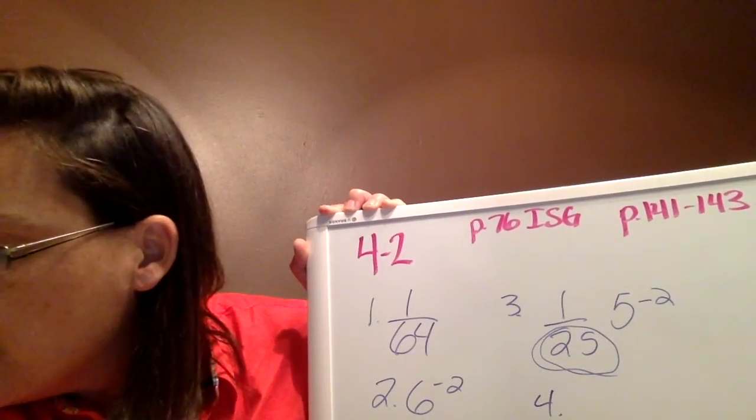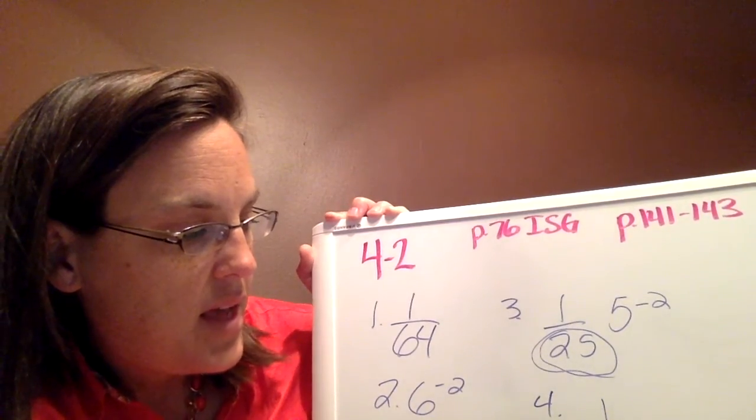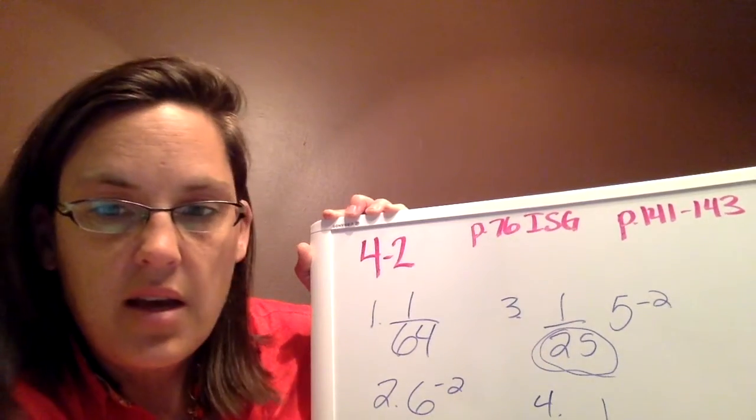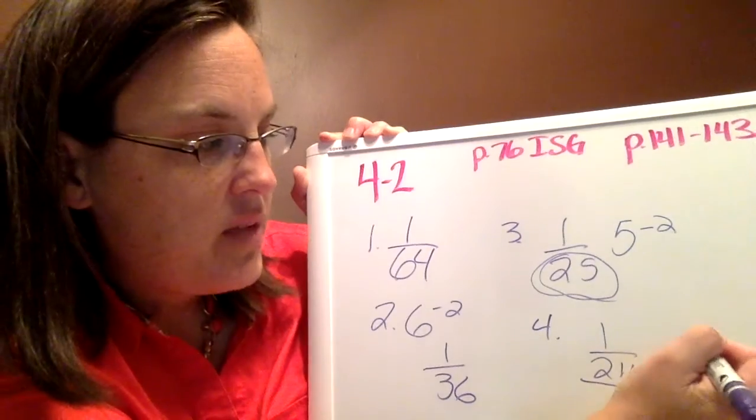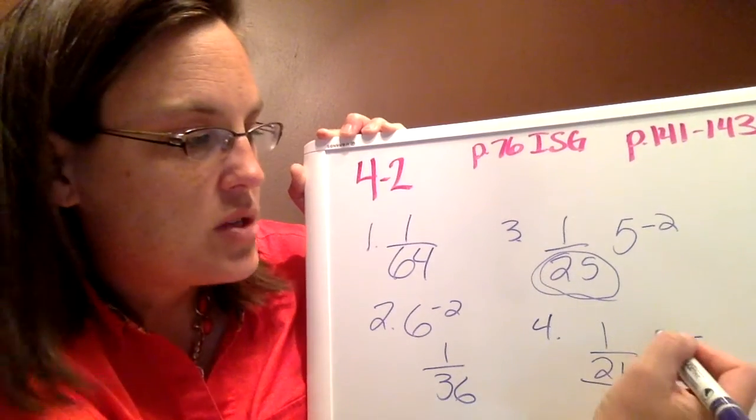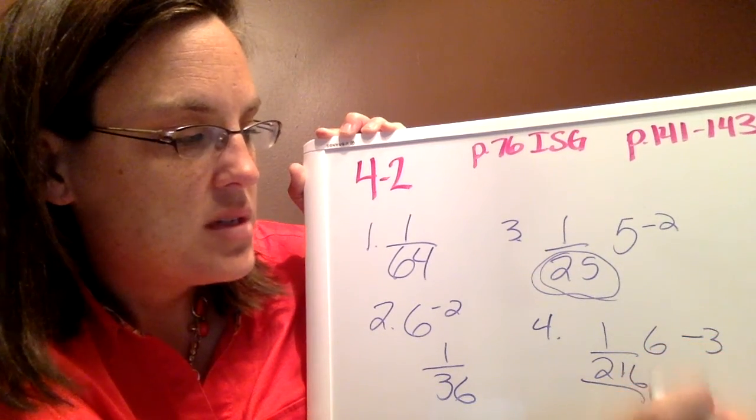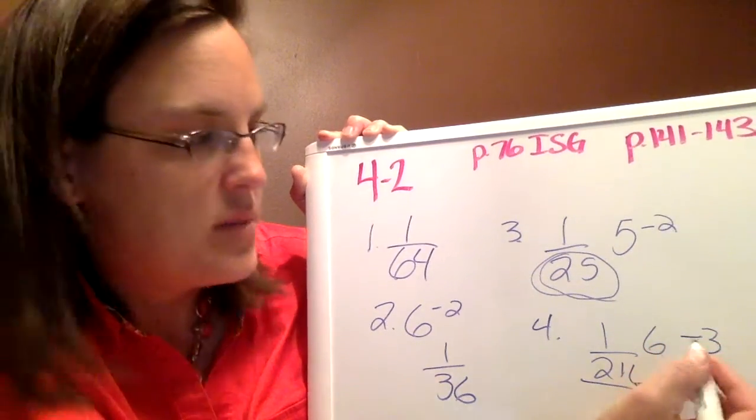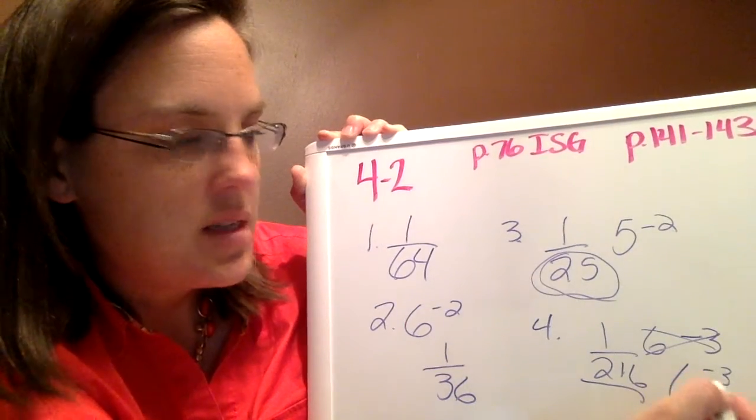For number 4, it is 1 over 216. Again, in order for that to be on the denominator, we know that it had to be a negative exponent. And 216 is actually 6 cubed. So in order for it to move to the bottom, it has to be 6 to the negative third power.